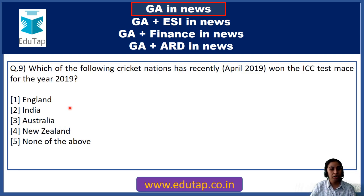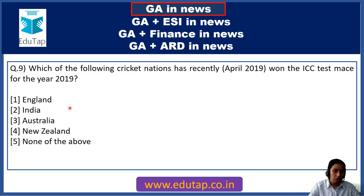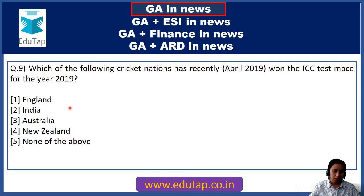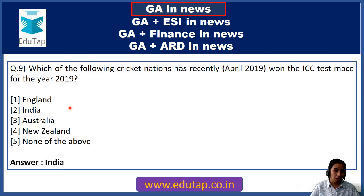Question 9: Which of the following cricket nations has recently won the ICC Test Mace for the year 2019? Options are England, India, Australia, New Zealand, or some other nation. The ICC Test Mace has been won by India, so option 2 is the correct answer.